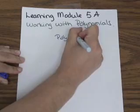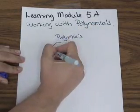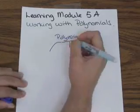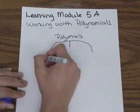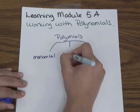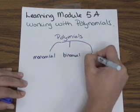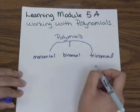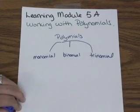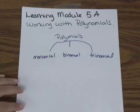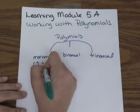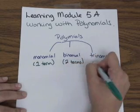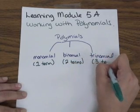Polynomials are basically an umbrella term for some other terms that we'll talk about. We have a monomial, a binomial, and also a trinomial. These are all polynomials, but there are some kinds of polynomials. Monomials only have one term. Binomials have two terms. And trinomials have three terms.